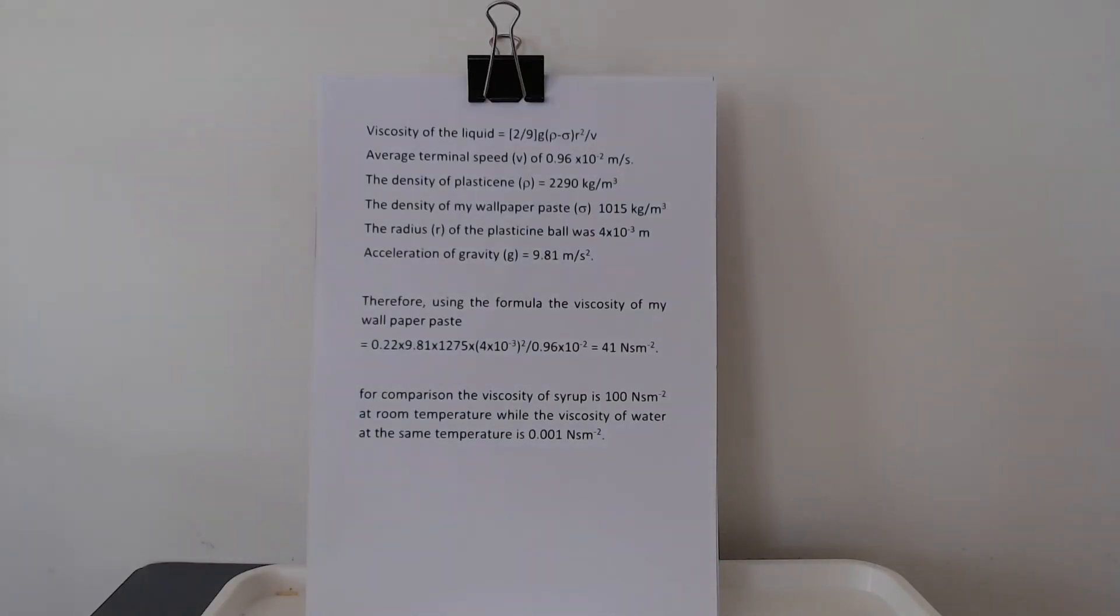Now, I said earlier that the speed depended on the radius of the ball and the density of the solid and the liquid, but it also depends on a property of the fluid called its viscosity. This is the property that makes syrup flow much more slowly off a spoon than water. And we can work out the viscosity of our paper paste using the following formula. You see it on the screen in front of you. The viscosity of the liquid equals that formula.